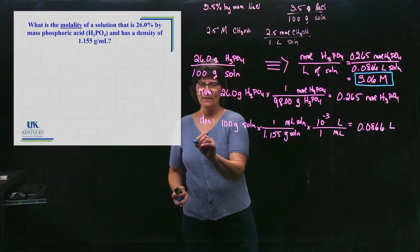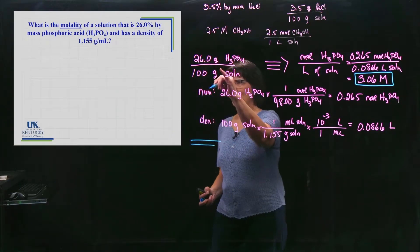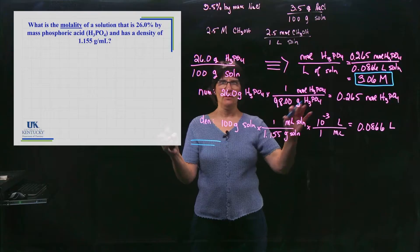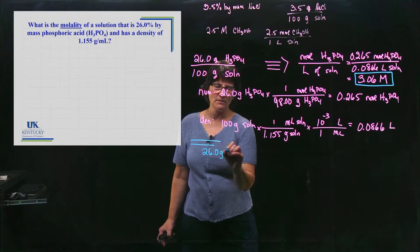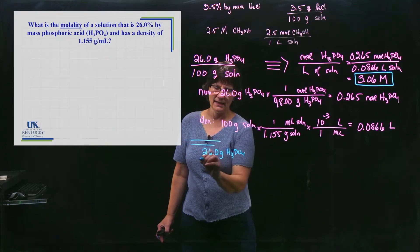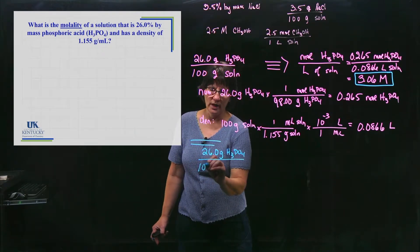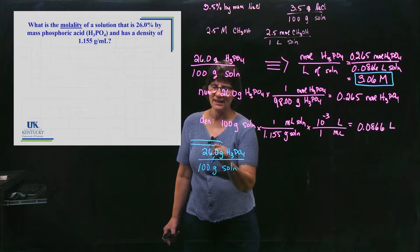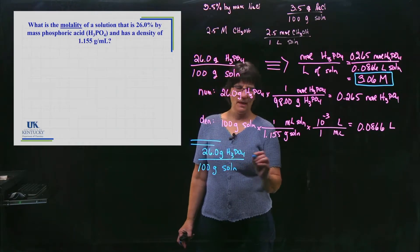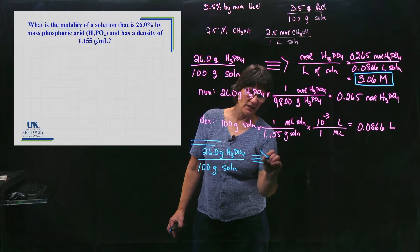So if I'm working this problem here, I, again, take, I'm going to pretend like I haven't done all this up here. I have my 26.0 grams of H3PO4, and that is per 100 grams of solution because they told me it was 26 percent.